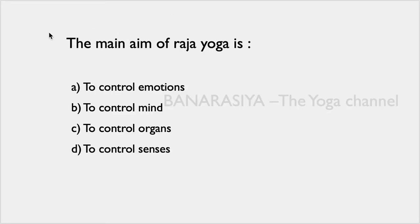The next question: the main aim of Raja Yoga is to control emotions, to control the mind, to control organs, or to control the senses? Raja Yoga ka main uddesh kya hota hai — vicharoon ko control karna, man ko control karna, organs yaani ki jo shareer mein tamam prakar ke shareerik avasthaaen aur parts hain unko control karna, ya indriyaan ko control karna.